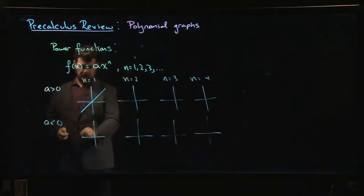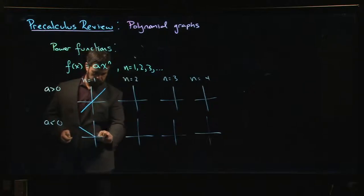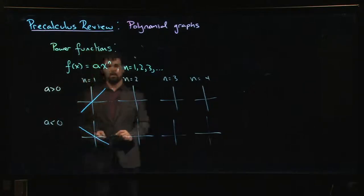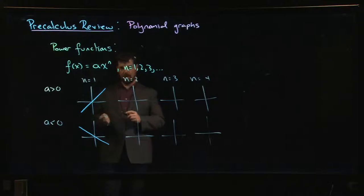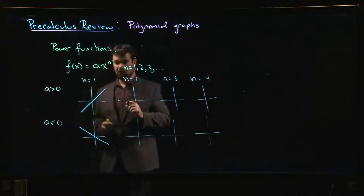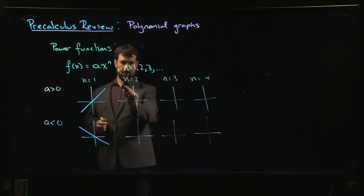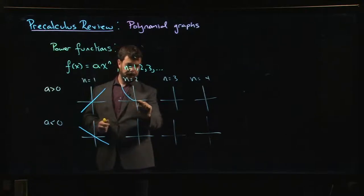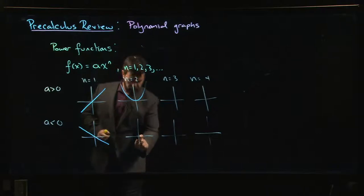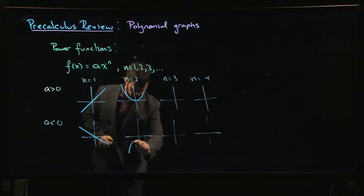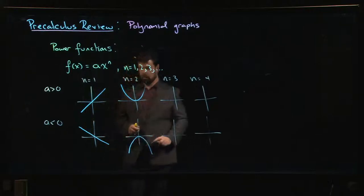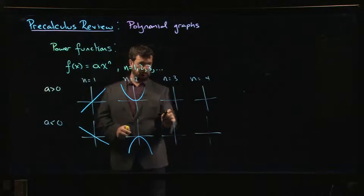If a is negative, negative slope, we're dealing with something like that. n equals 2, that's your basic quadratic, opening upwards if a is bigger than zero, opening downwards if a is less than zero.